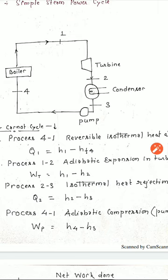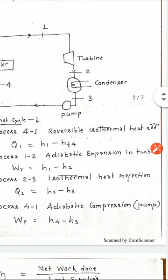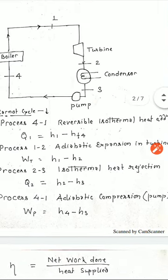Then process 1 to 2. Process 1 to 2 is the adiabatic expansion of steam in turbine. So, what is the work output of turbine? That is H1 minus H2. It means enthalpy before entering to the turbine minus enthalpy after exhausted from turbine.